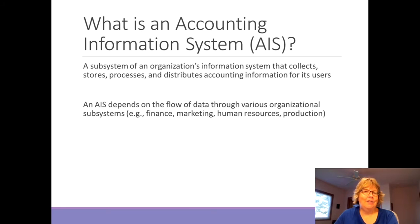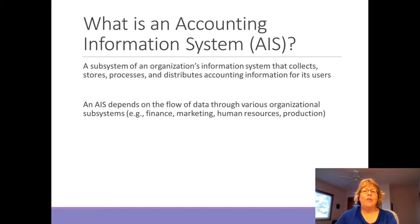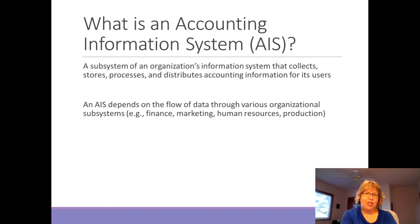So what is an AIS? An accounting information system is a subsystem that focuses on accounting information. Typical accounting information that goes out to users includes financial statements, but it can also include managerial reports used internally for decision making. Accounting depends on the flow of information from other subsystems — marketing, finance, supply chain, human resources, production — and depending on the complexity of the organization, there may be many more.